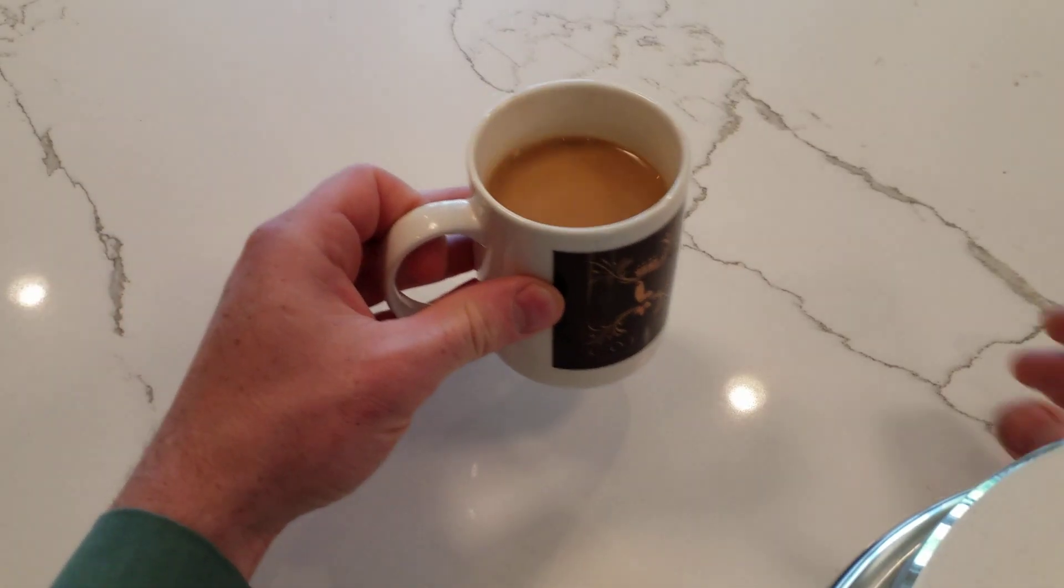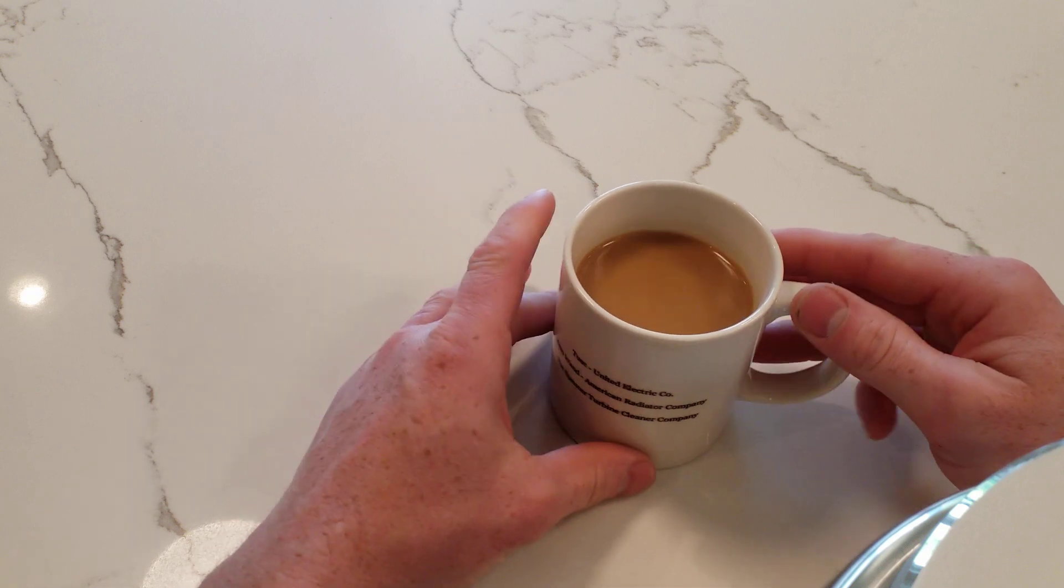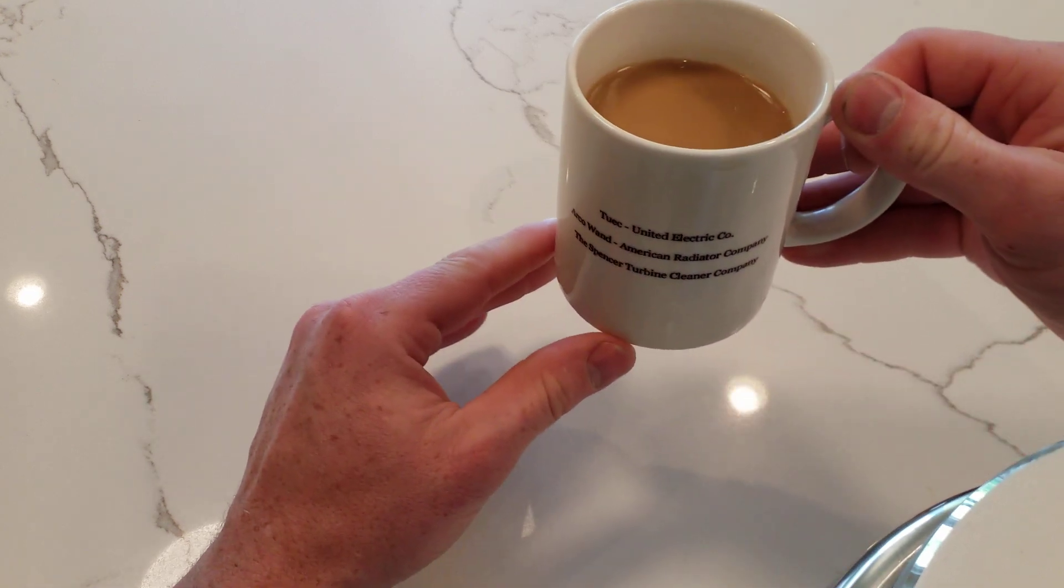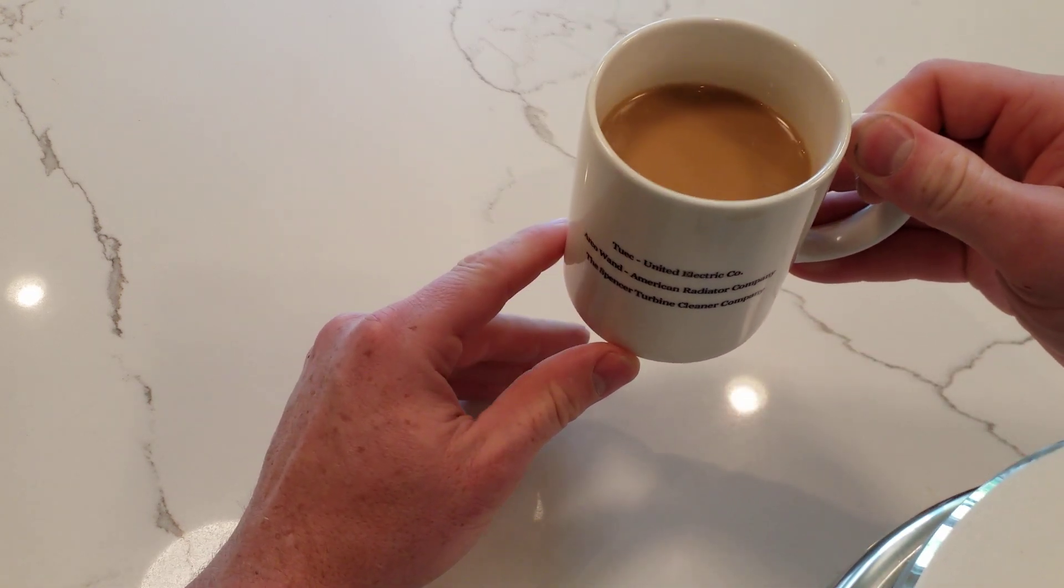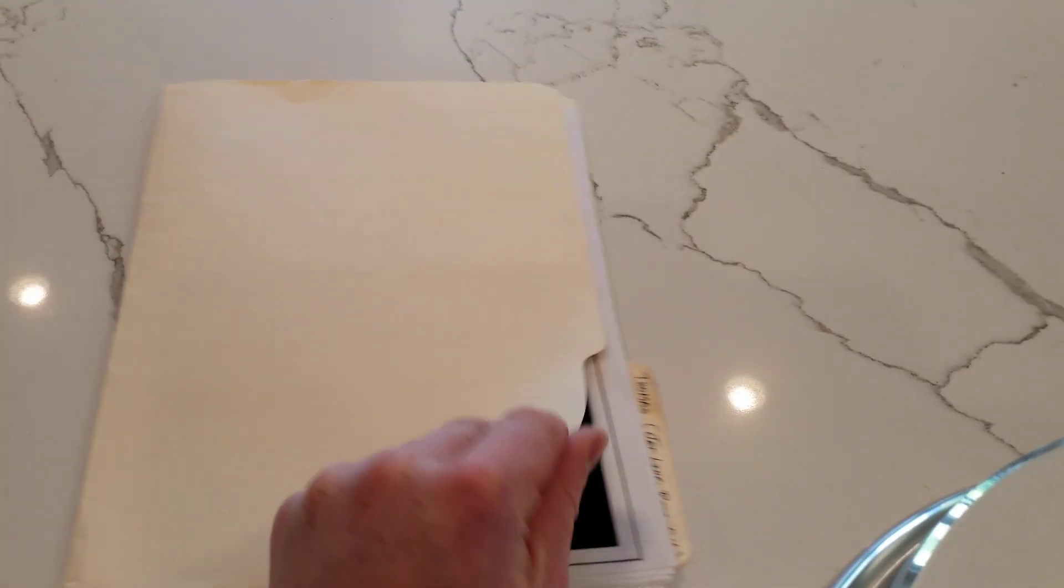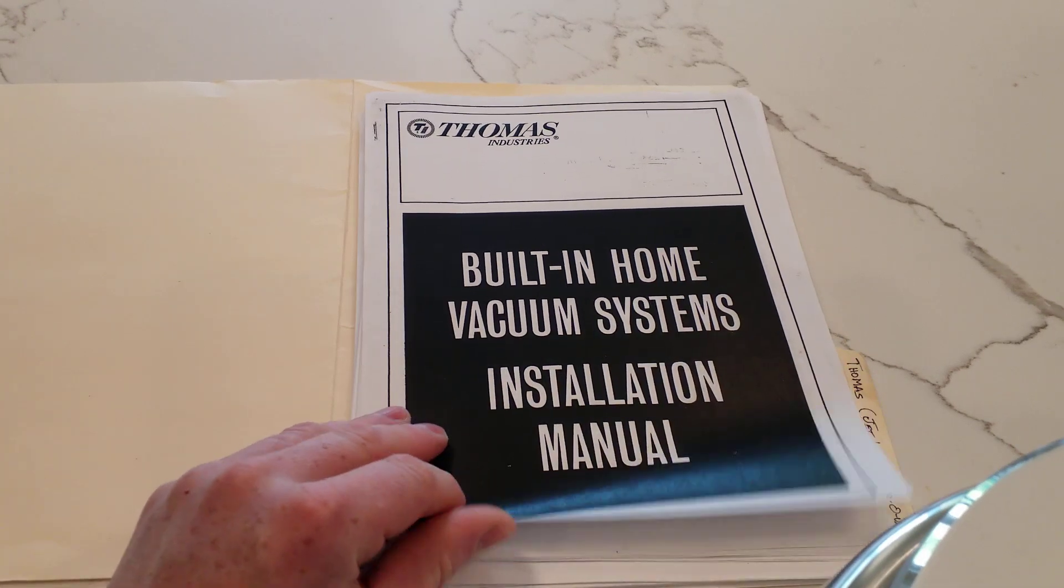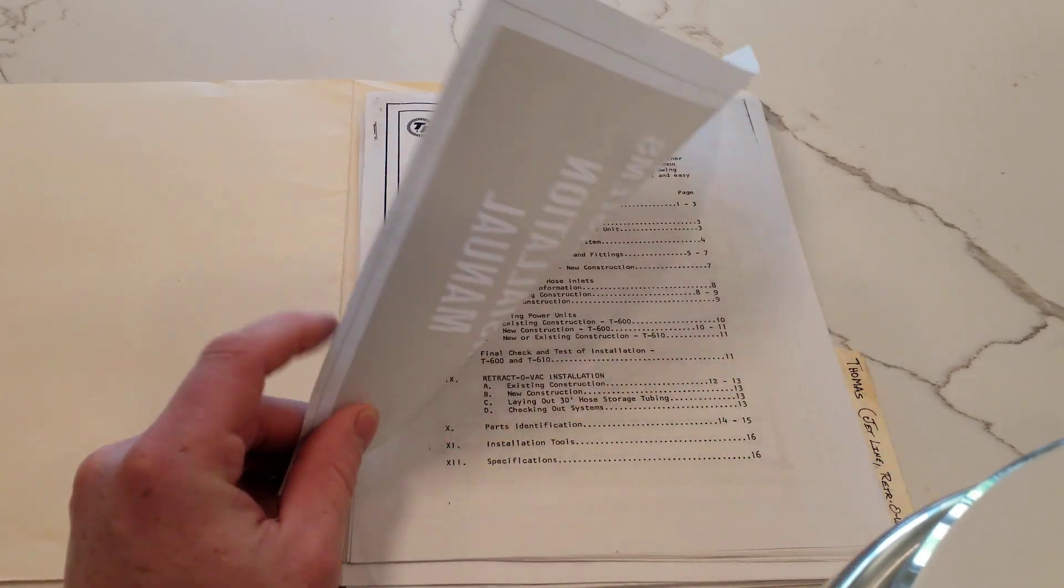Good morning. On today's Coffee and Cleaners, we will be talking about something quite a bit newer than anything featured on the back of my Coffee and Cleaners mug here, but it still goes back over half a century to the beginning of the retractable hose central vac industry.